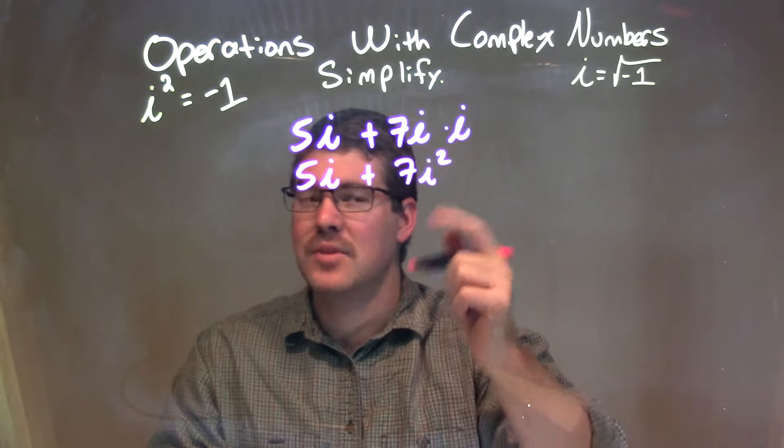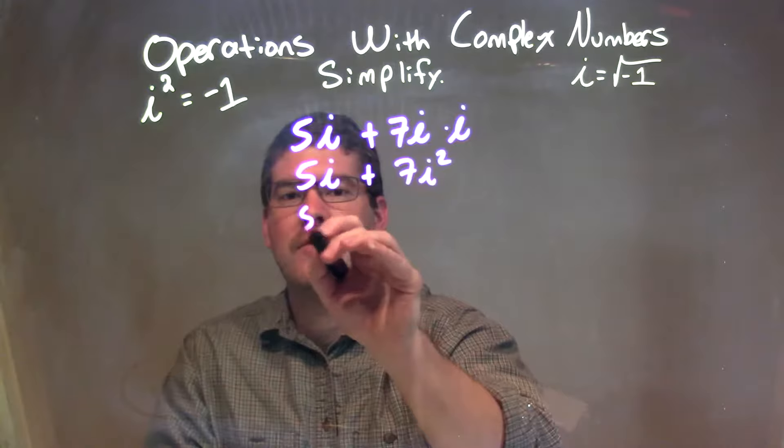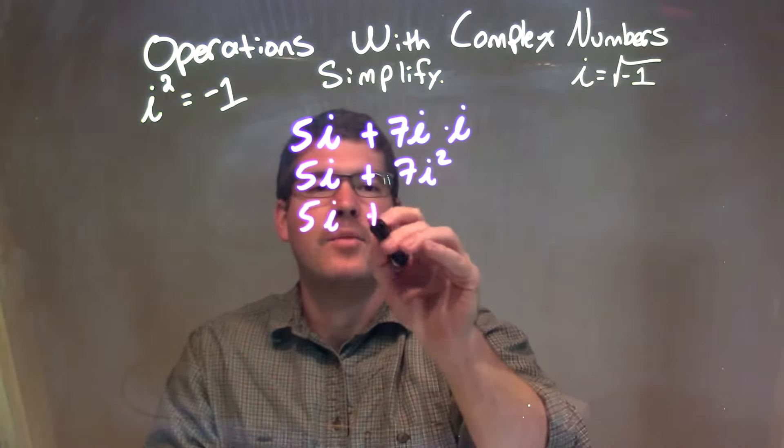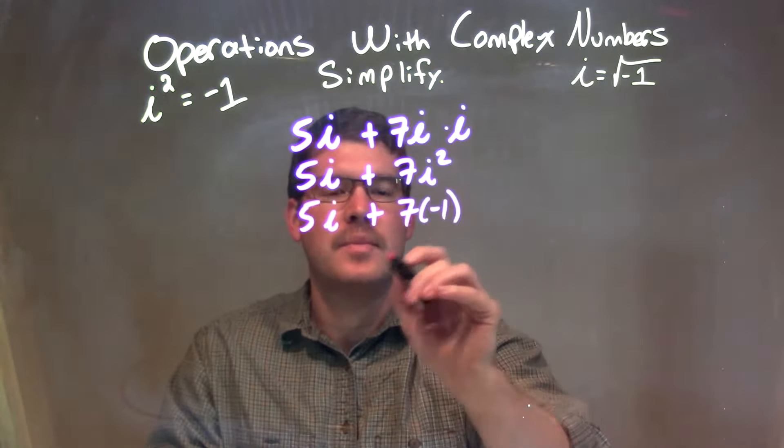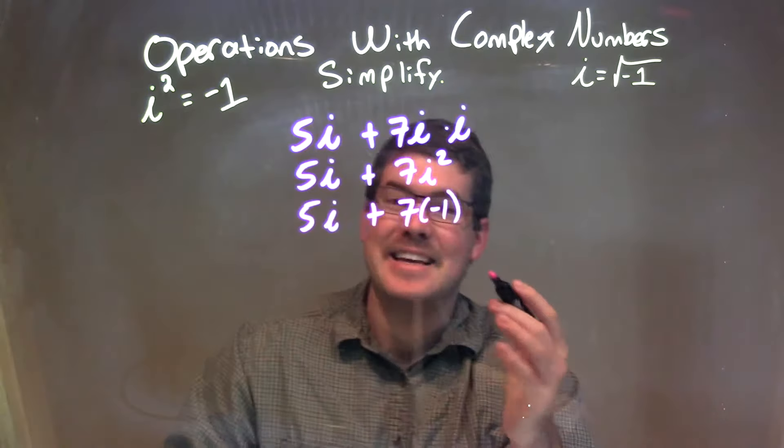And i squared, we know is negative 1. So we have 5i plus 7 times negative 1, which in reality is negative 7.